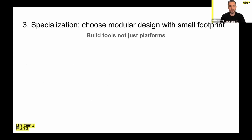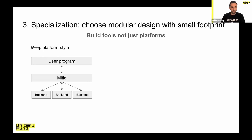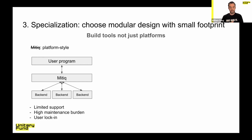The third strategy is specialization. The perspective here is to suggest building tools and not just platforms. Platforms are good and useful, but they're hard to make go the distance. In choosing MITIC, we could have done a platform style: take a user program, run it through MITIC, MITIC talks to whatever backend you want, passes back the answer. But this has some downsides architecturally: limited support — you can only support backends that have code to integrate with MITIC; a relatively high maintenance burden — every time one of those backends changes, the MITIC maintainer needs to keep up; and the user might get locked in if they want to create some new backend or move stuff around.